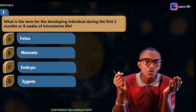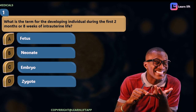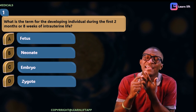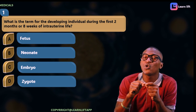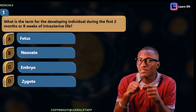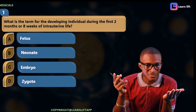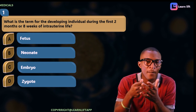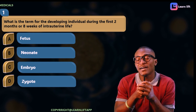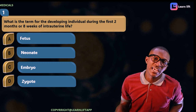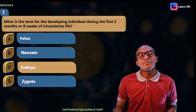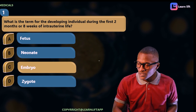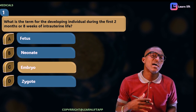We say that there are three stages. We have the zygote stage, which is zero to two weeks. Then we have the embryonic stage, which is from the third week to the eighth week. The eighth week is the same as two months, because four weeks make one month. You also have the fetal stage, which is from the ninth week to your ninth month. So the embryo is the answer — option C is correct.